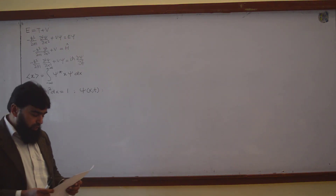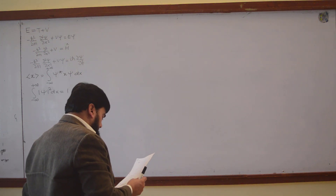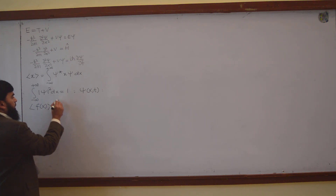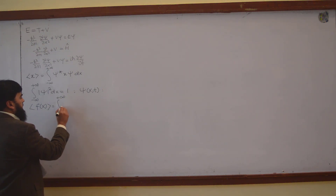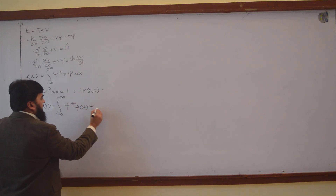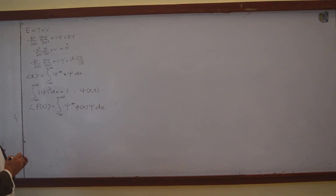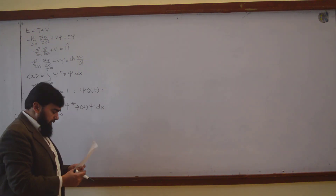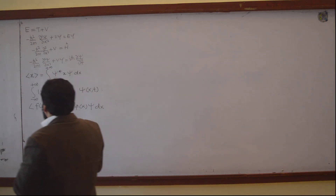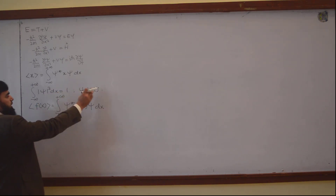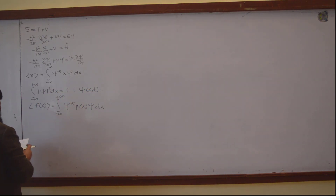The wave function that we use in the Schrödinger equation is already normalized. Unless and until the wave function is normalized, you cannot use it in the Schrödinger wave equation. If you solve the Schrödinger wave equation, the wave function that comes out will actually be a normalized wave function. So for the expectation value of any function f(x), it is the integral from minus infinity to plus infinity of ψ* f(x) ψ dx. And the question is whether this wave function will remain normalized for all time — the answer is yes.